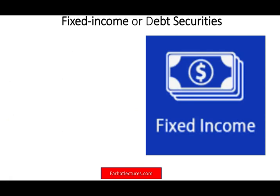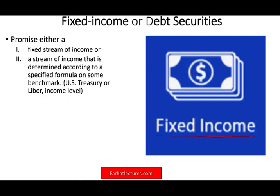Starting with fixed income or debt securities. These securities are basically you are lending — you are buying bonds, you are buying annuities, you are lending money. What do you get in return? You're going to get a promise, a fixed income stream. Generally speaking, when you buy a bond, you will get some fixed income, for example the interest payment. Or sometimes you may get a stream of income determined according to a specified formula using some benchmark.